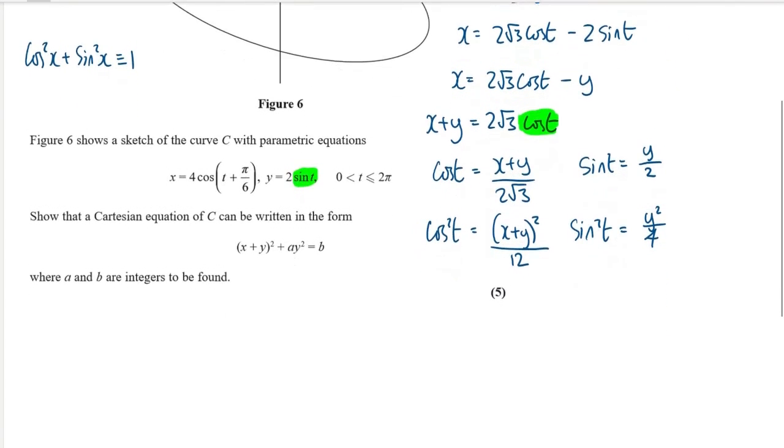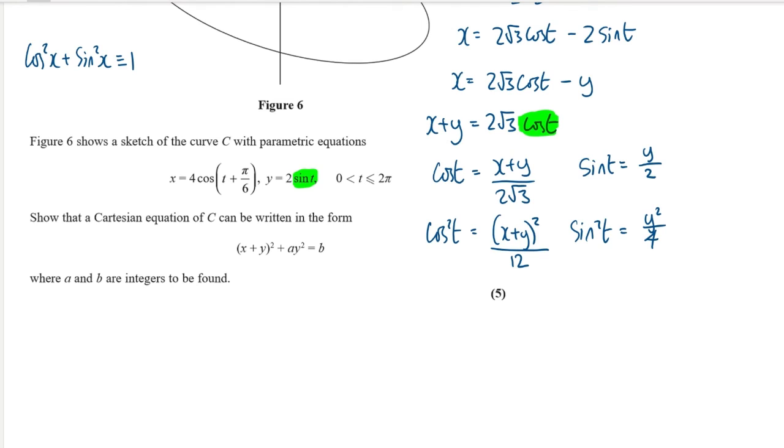Now we know like I said before that cos squared plus sine squared is equal to 1. So that means I can say that (x plus y) squared over 12 plus y squared over 4 is equal to 1.